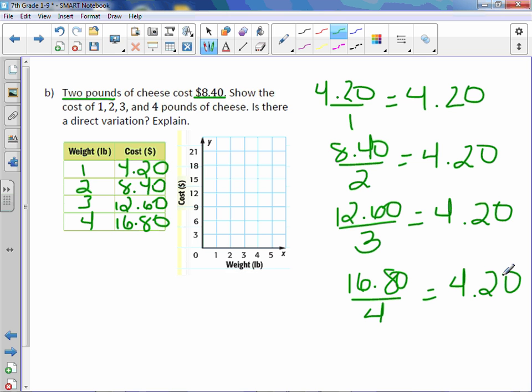Let's graph and make sure that we're on the same page. Again, do the best you can. 1, $4.20. 2, $8.40. 3, $12.60. And 4, $16.80. Mine is a little bit off. Let me straighten it out. So as you can tell, it is a straight line. It does go through the origin, which also makes it a direct variation.